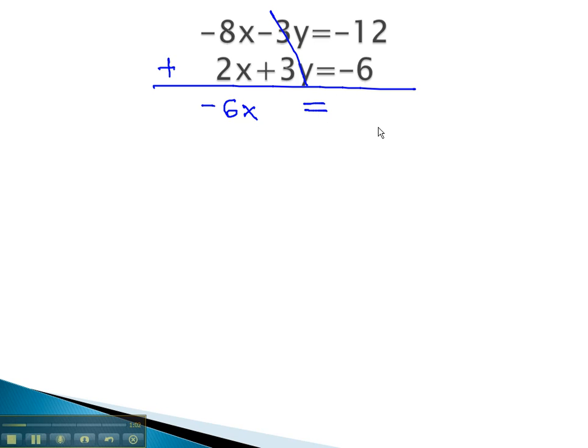There are no y's left in this equation. As we add the right side, negative 12 and negative 6, we get negative 18. And we now have an equation that we can quickly solve for x by simply dividing by negative 6. We find x is equal to 3.